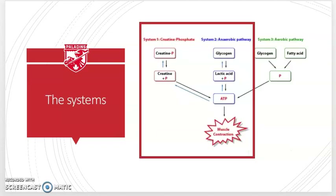There are two primary systems when it comes to anaerobic training: the lactic and the alactic system. The alactic system is also called the creatine phosphate system, which you may have learned about in grade 12 biology. It's also one of the reasons people supplement creatine when working out — to help boost this system. The alactic system is our most ready and available system, but also produces energy for the shortest period of time.